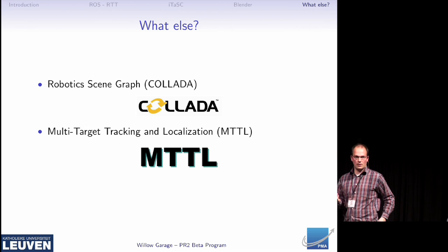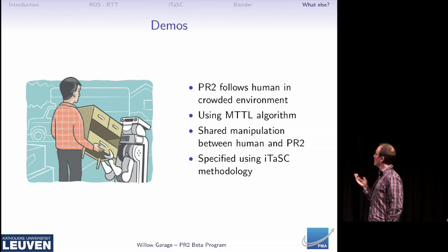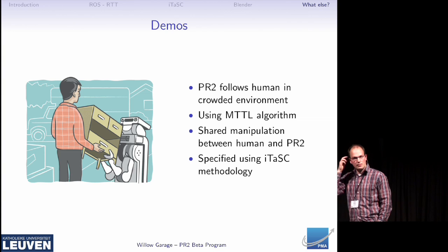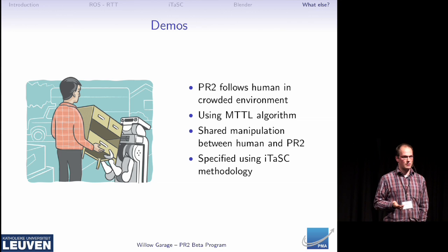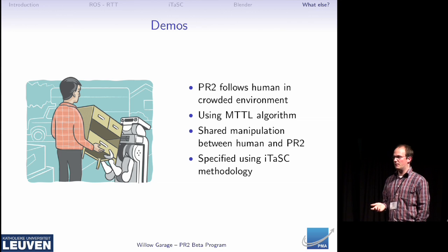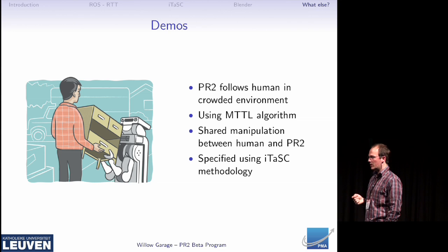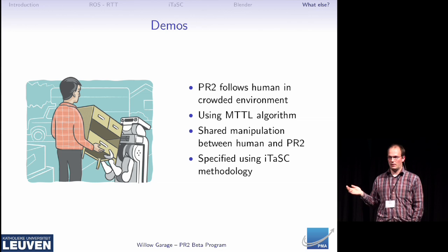Of course, we need to show off all those implementations — it's just software, we need some demos. One of the demos we are going to do, as you can see in the picture provided by Ken, is going to walk in a crowded environment with the PR2 following a person and basically do a moving task. We will try it with different objects, and for all this we'll use the multi-target tracking and localization algorithm, and we'll show that it's possible to define such a task with the ITASC framework. We'll have some more demos, which I'll gladly explain if there are any questions — you can always come by later on.